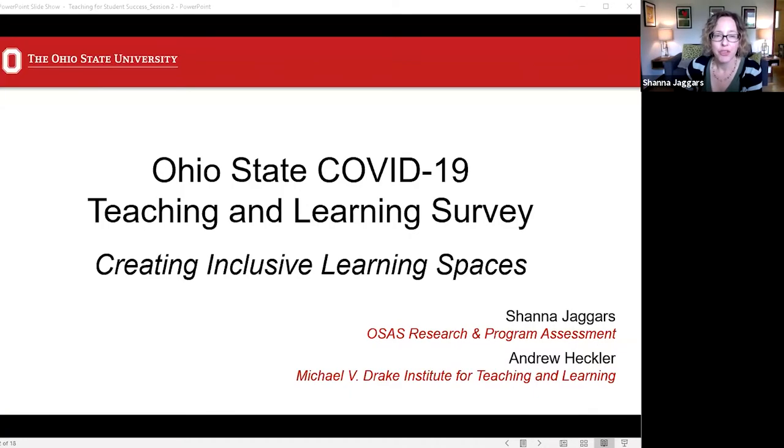So to start us off, Shauna, you did a study of COVID-19 at OSU. What were some key findings related to creating inclusive spaces from spring 2020 that instructors should consider as they prepare for their autumn courses? Thanks, Sri. Our survey this spring looked at how COVID-19 and the shift to online classes impacted teaching and learning. We had about 3,400 undergraduates and about 750 faculty respond to the survey.